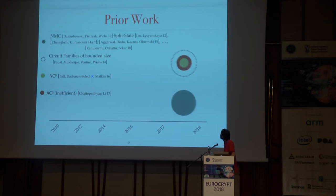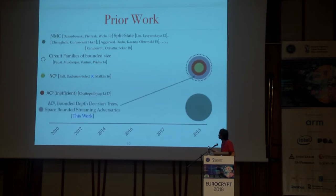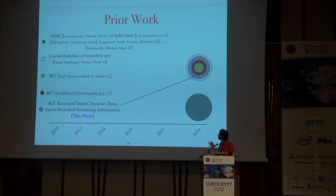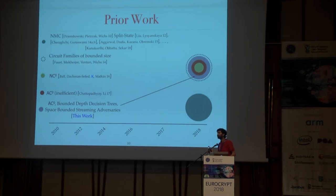In this work, we extend this line of work to show how to construct non-malleable codes against AC0 tampering functions, tampering functions modeled as bounded depth decision trees, and space-bounded streaming adversaries. I will explain what these three models mean in general.